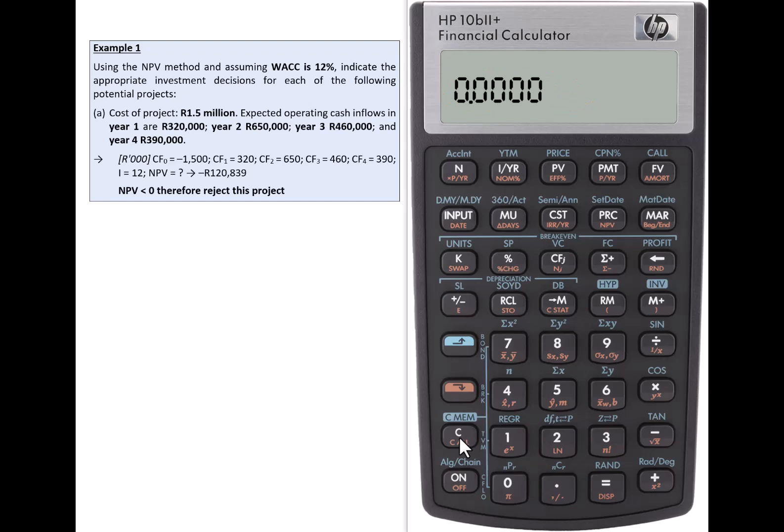Turning attention to the cash flows and working in units of 1000 Rand just to save on the number of keystrokes involved, we start by entering the project cost which is 1500 and changing sign to indicate that it is a project cost, and then entering that into the CF subscript J key and noticing that we have CF0 flashed onto the screen, reassuring us that we are correctly recording that cash flow at time zero.